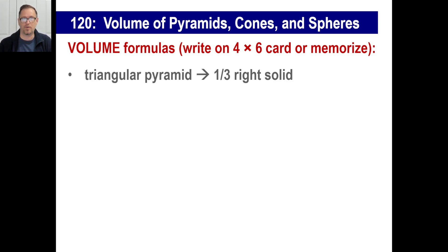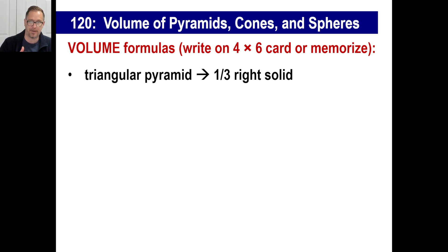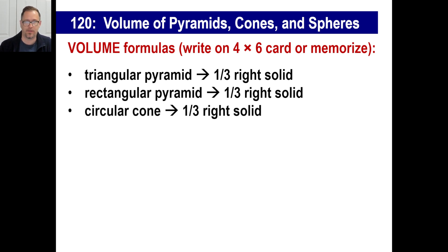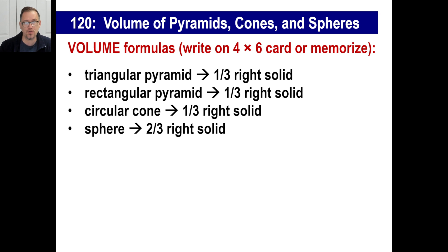Let's write these down. These are formulas for volume. If you have a triangular pyramid, it's going to be one-third of the right solid that it sits in. A rectangular pyramid is also one-third, and a circular cone will also be one-third of the right solid. A sphere, however, is two-thirds of the right solid it sits in.